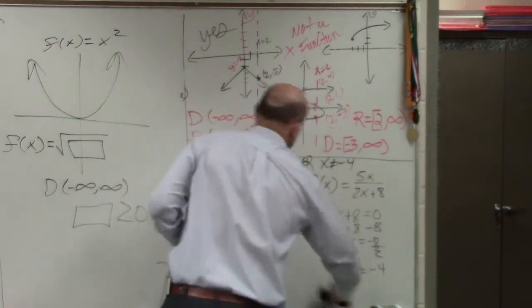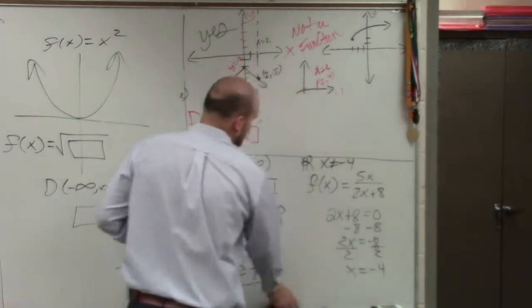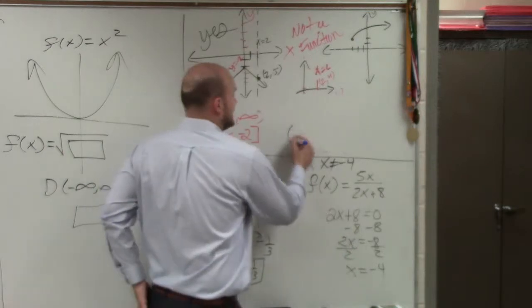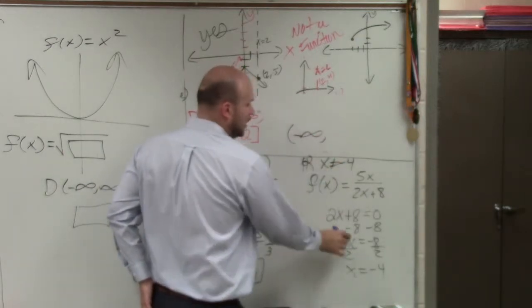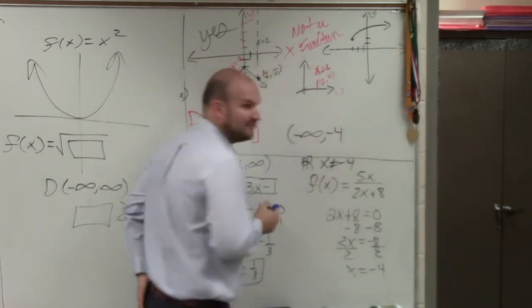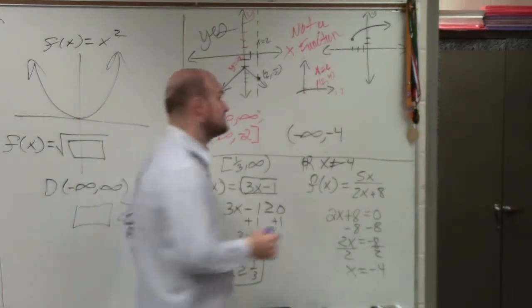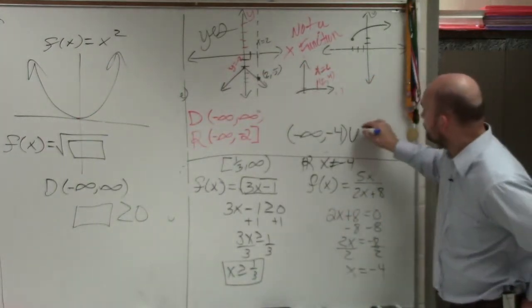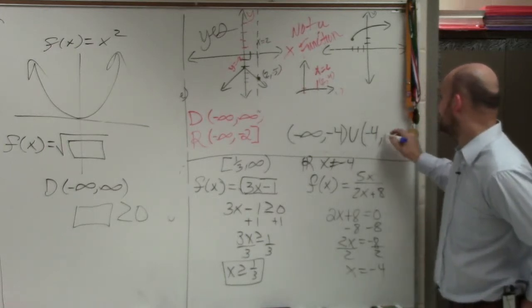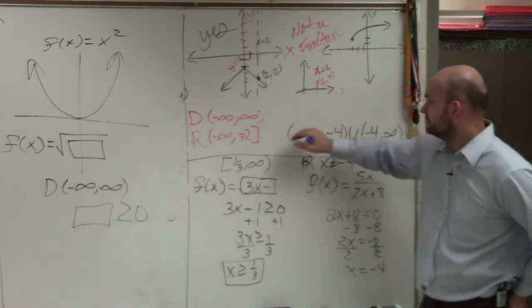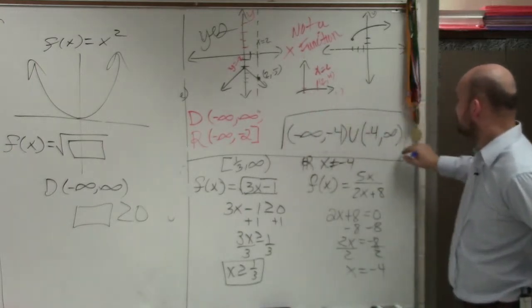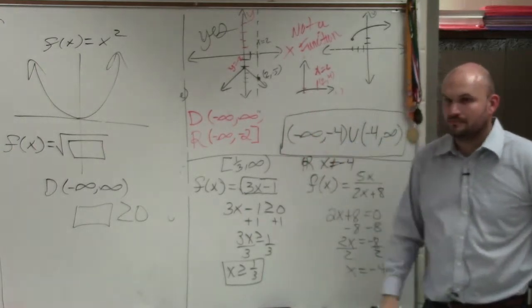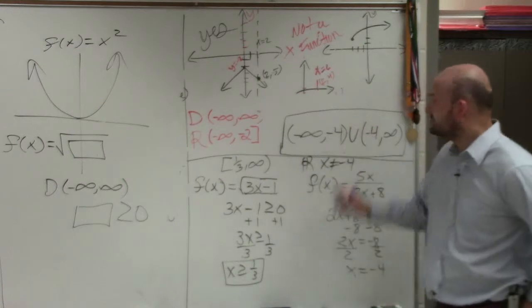Can I erase this here? They're going to write it like this. It goes to negative infinity all the way to negative 4. Negative 4 is not in the solution, right? So it's not contained. So you'd use a parenthesis, union negative 4 to infinity, OK? That's how we'd write it in set notation.